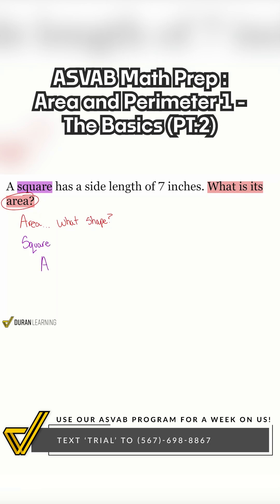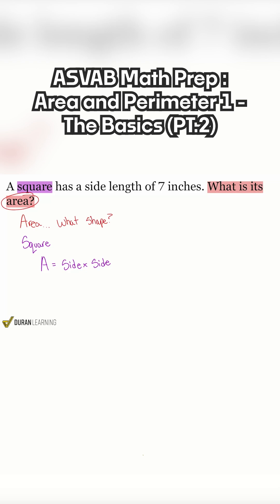The area of a square is the side times the side. Are we given the side? A square has a side length of seven inches. Do we have the side? Yes, we do. So this is a very straightforward question. We just plug it in and we're done.